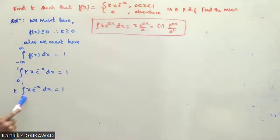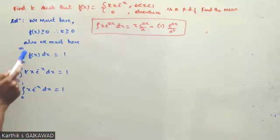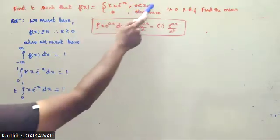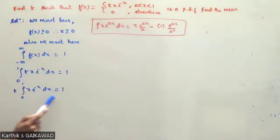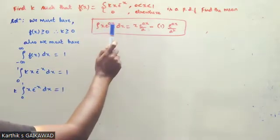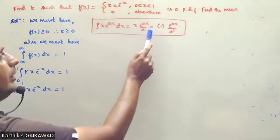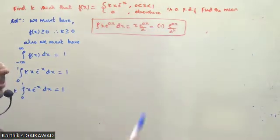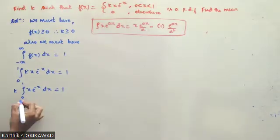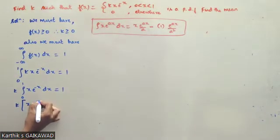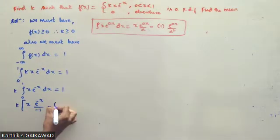The integral from 0 to 1 of kx·e^(-x) dx is equal to 1. So k times the integral of x·e^(-x) dx equals 1. Using integration by parts: x times e^(-x) by (-1), minus differentiation 1, times e^(-x).